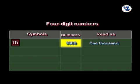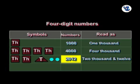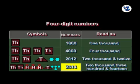One thousand, four thousand, two thousand and twelve. Two thousand, three hundred and fourteen.